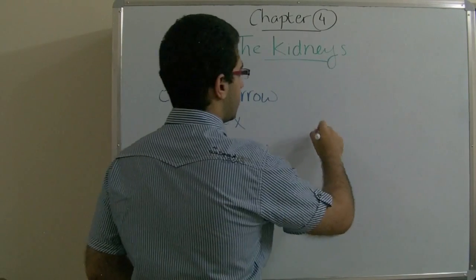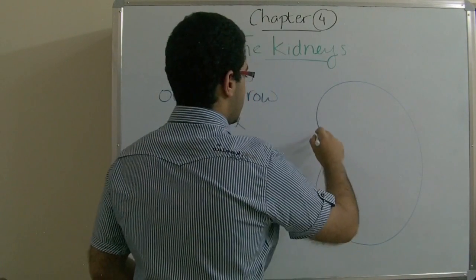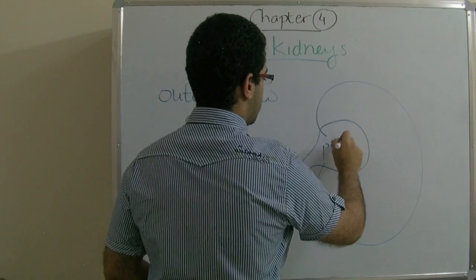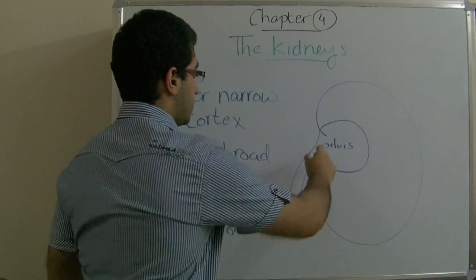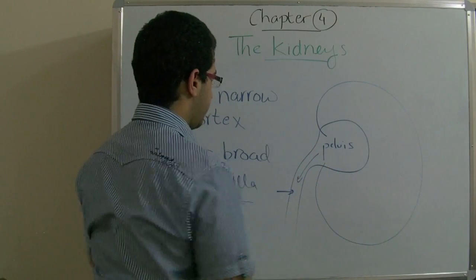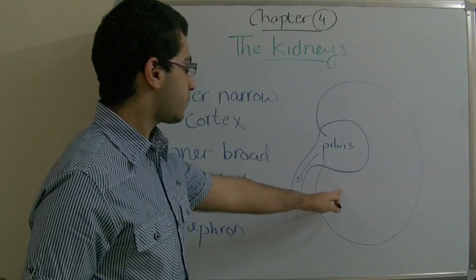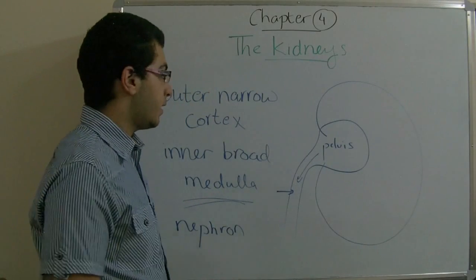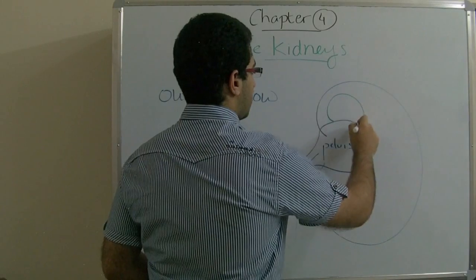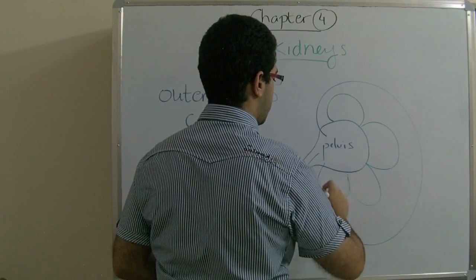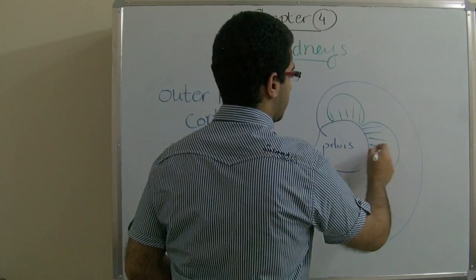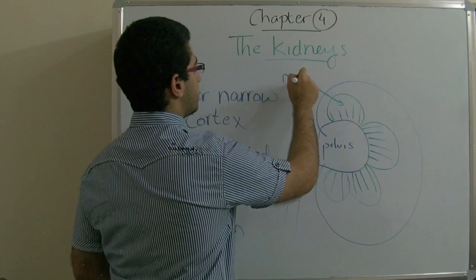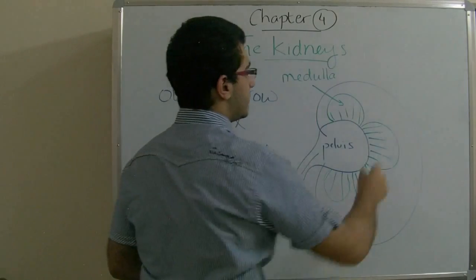If we look at a diagram of the kidney, this part here is called the pelvis, where the urine is collected and then goes through the ureter — the tube which connects the kidney to the urinary bladder. This broader inner region is the medulla.